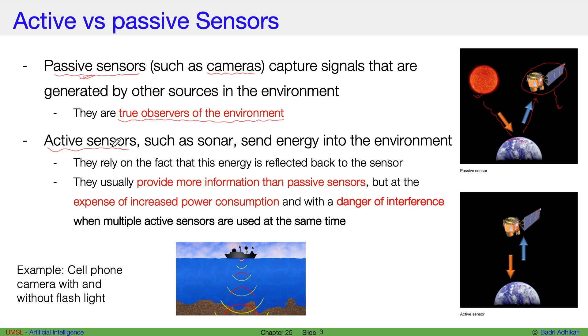Active sensors, on the other hand, send energy into the environment. An example is a sonar. So in a sonar, you send out signals and then you read the signals back, and by reading the signals you collect information about the environment. So active sensors rely on the fact that this energy is reflected back to the sensor.